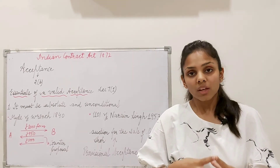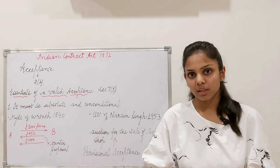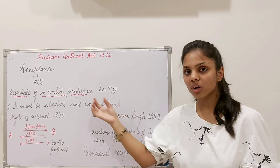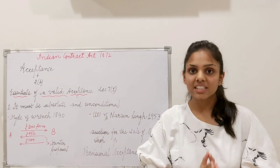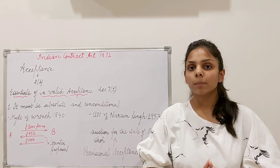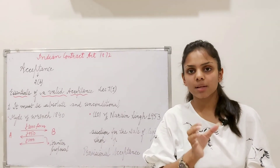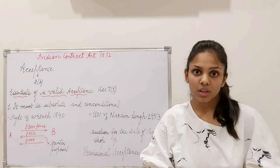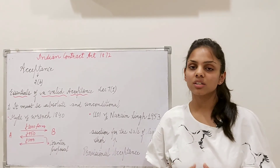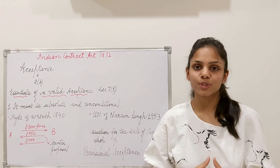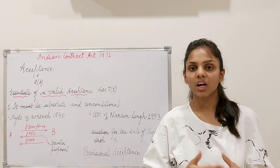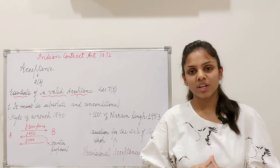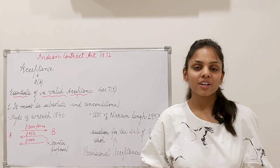So I hope you understood that this is the first essential of a valid acceptance. If you open the bare act at Section 7 Clause 1, its heading says acceptance must be absolute and must not be conditional. So acceptance must be 100%, it must be the mirror image, it must not be conditional, it must not be partial, and it must not be provisional. These two case laws should have helped clarify this point well. In my upcoming videos I'll be discussing the other essentials of a valid acceptance — since they are quite long, I'll be breaking them into parts. Thank you so much, I hope you understood. Keep learning, stay fit, and bye-bye.